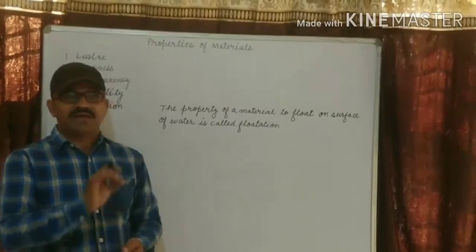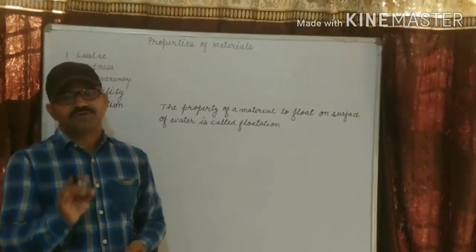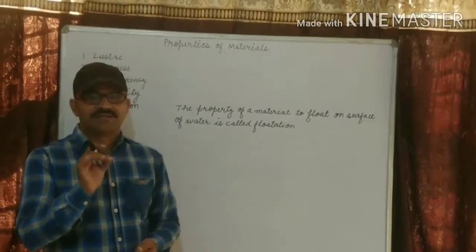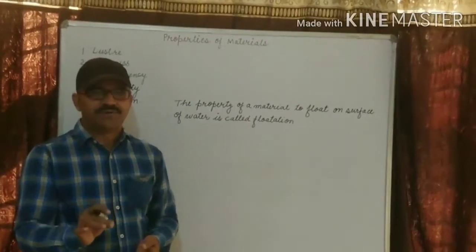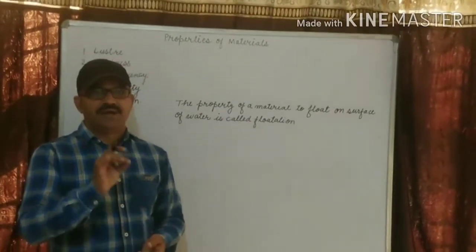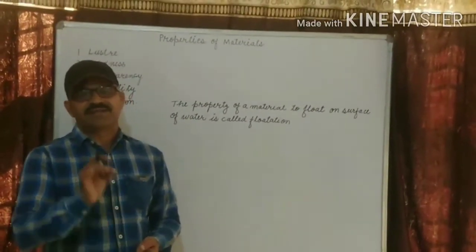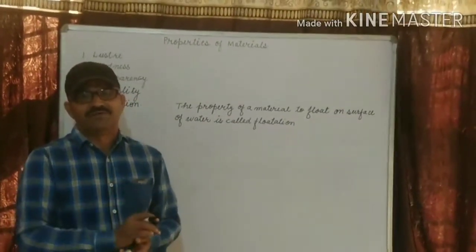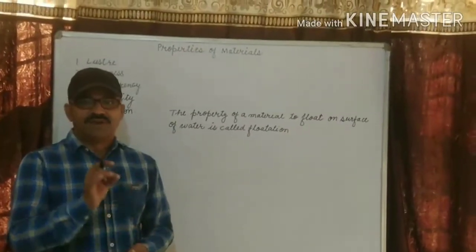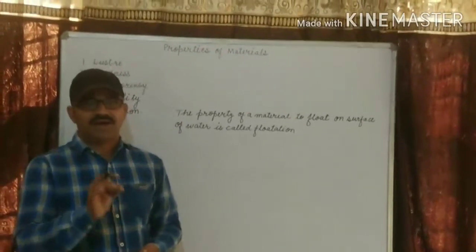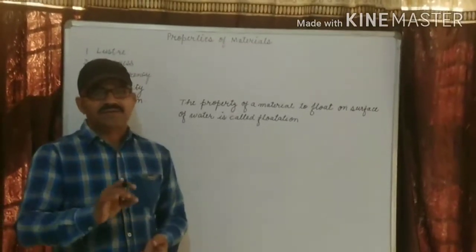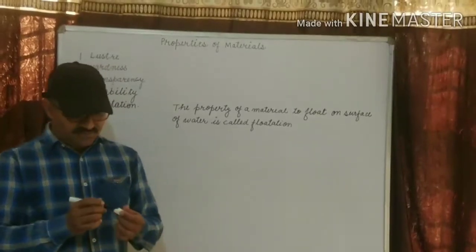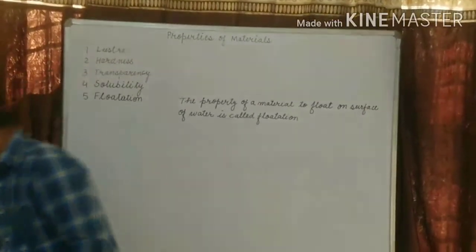Density is defined as mass per unit volume. Materials such as wood and leaf are less dense than water and thus they float on the water. Materials such as rock and iron are denser than water and they sink.